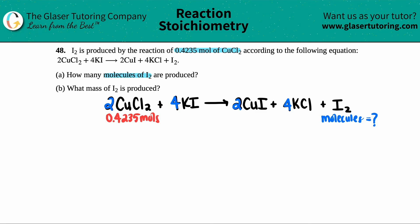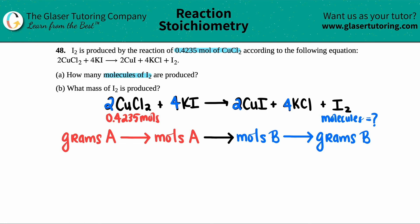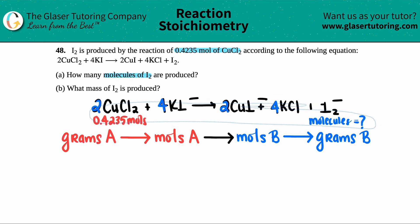Now, the general flow of stoichiometry problems is this right here. So I just like to run it over in my head. I say grams to moles to moles to grams, grams to moles to moles to grams. That's like the general flow of a stoichiometry problem. Chances are you're going to start with grams and you're going to end with grams. However, you can change this flow diagram to whatever you need.